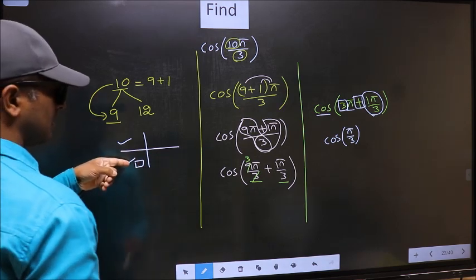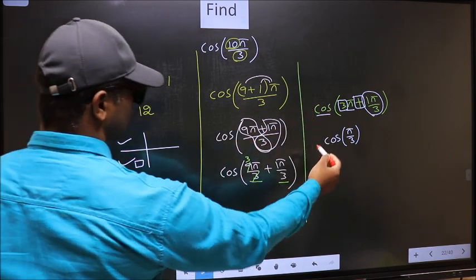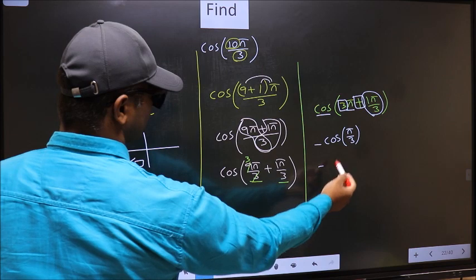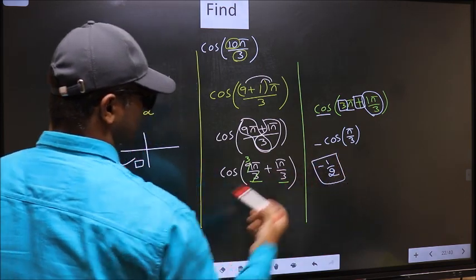And in the third quadrant, cos is negative. So we should put negative. So negative cos π by 3 is 1 by 2. This is our answer.